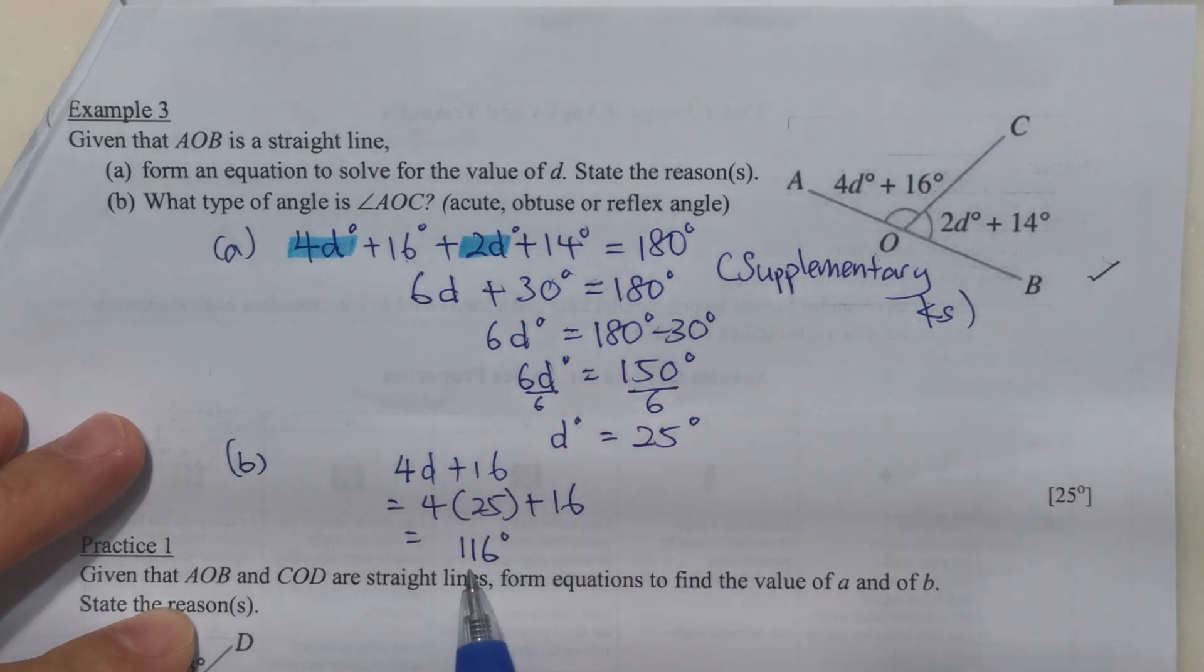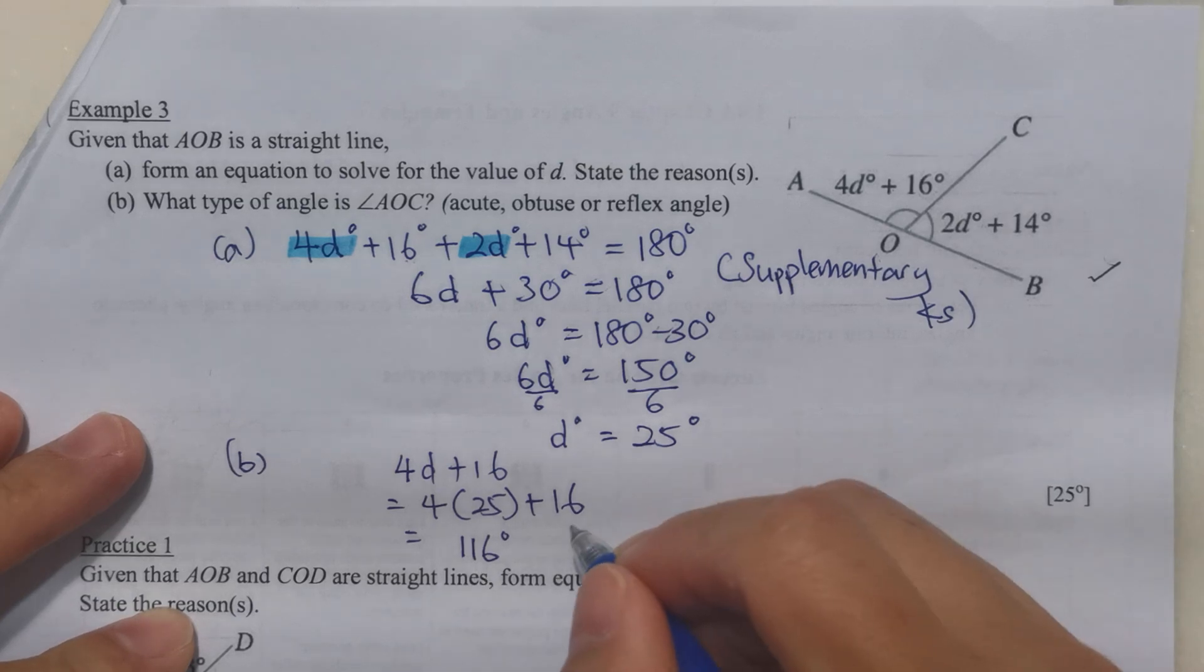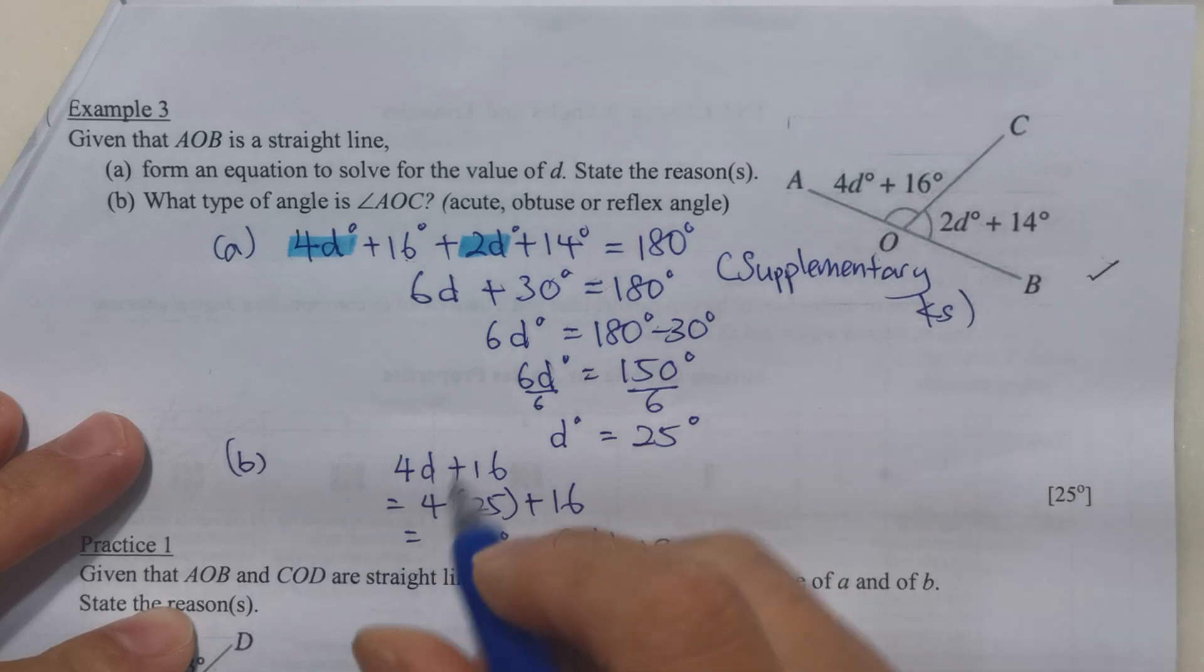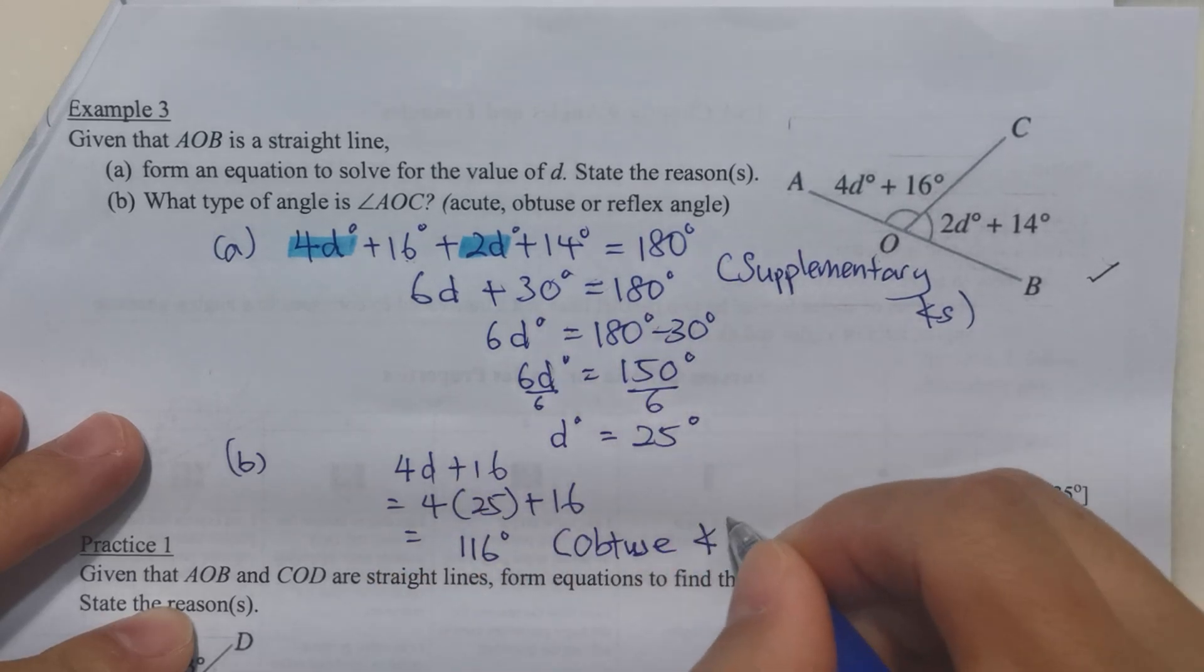We know that angles that are bigger than 90 degrees and smaller than 180 degrees are known as obtuse angles. So angle AOC is an obtuse angle.